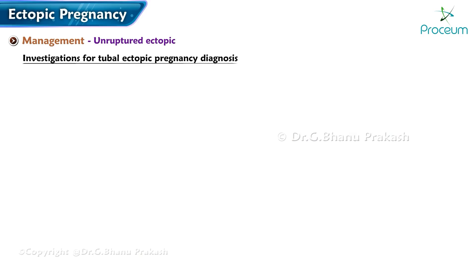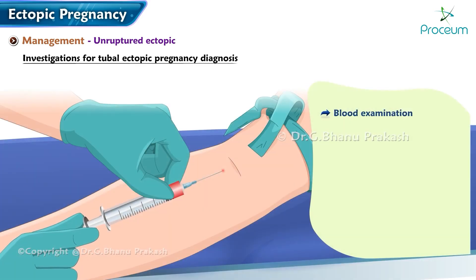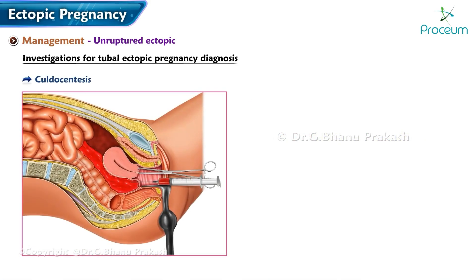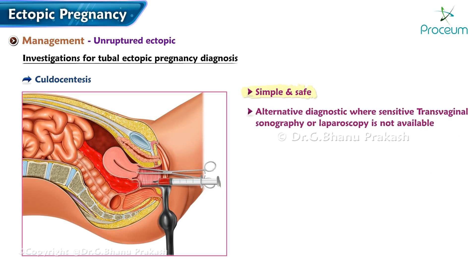Investigations for tubal ectopic pregnancy: blood examination should be done routinely for hemoglobin, ABO and Rhesus grouping, total white cell count and differential count, and erythrocyte sedimentation rate. There may be varying degrees of leukocytosis and raised ESR. Culdocentesis is simple and safe where transvaginal sonography or laparoscopy is not readily available.